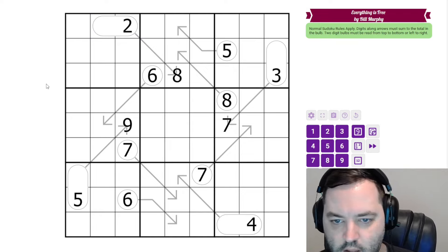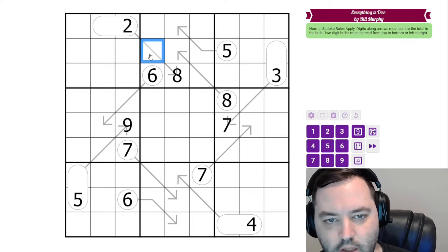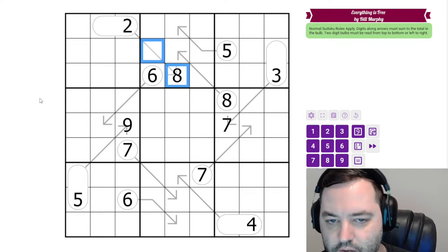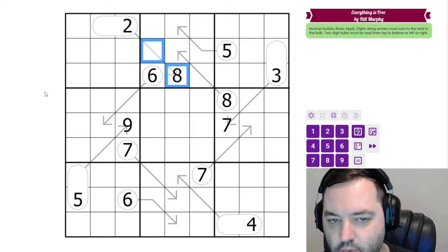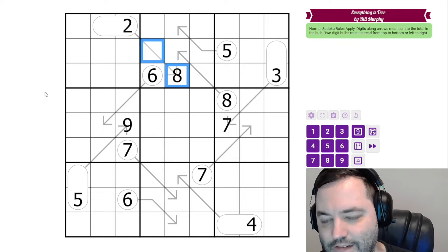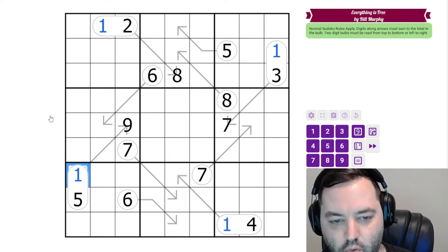Those are the rules, and we can immediately fill in the two-digit totals because all of them are two-cell arrows. And the highest we can have on a two-cell arrow, even with repeats, is 9 and 9, which is 18. So we're never going to get above something starting with 1. So these are all 1.